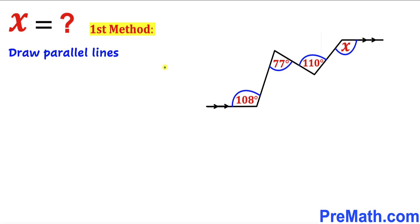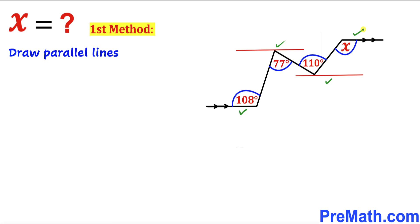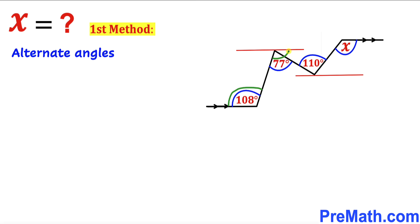Let's go ahead and draw some parallel lines over here. I have drawn these lines that are parallel to the given lines — in other words, all these straight lines are parallel to each other. Now let's make an observation. We can see that these two straight lines are parallel and this line is a transversal, so this angle and this angle are going to be alternate angles and these angles are going to be congruent.